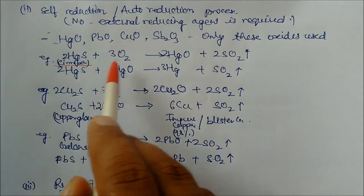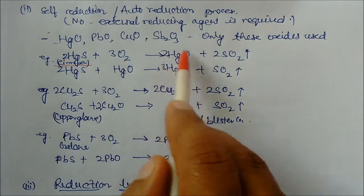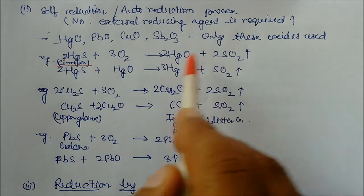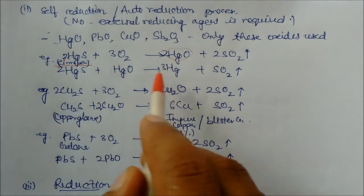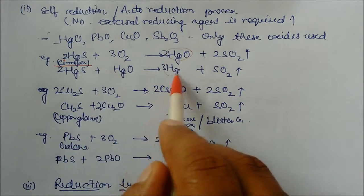This is your cinnabar HgS. In presence of oxygen roasting, we will get this mercury oxide and SO2. So this oxide acting as a reducing agent, you can see here, and it will separate the sulfur from the cinnabar. So we will get here crude metal.